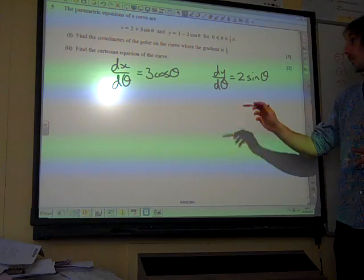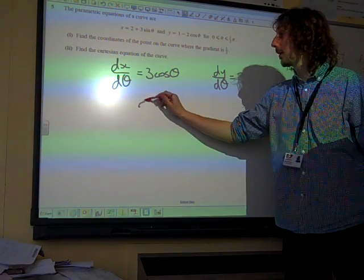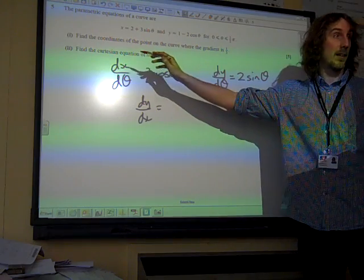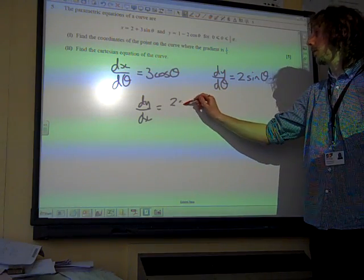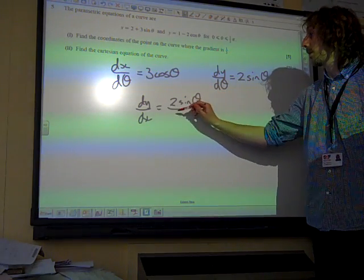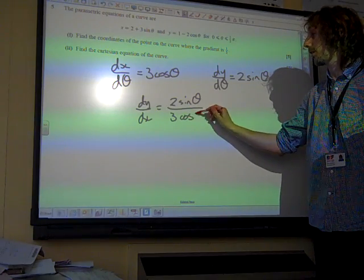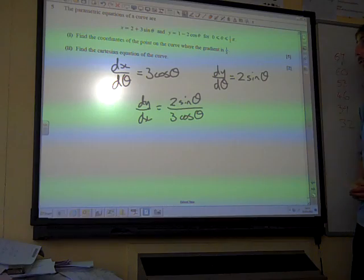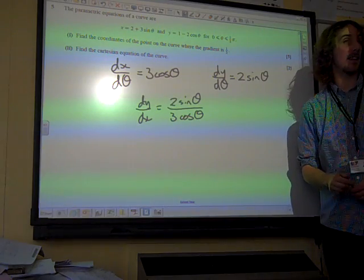If we put it together now, dy/dx is dy/dθ divided by dx/dθ, so that's two sine theta over three cos theta. That's found dy/dx. That was easy enough. We want to find when the gradient is a half.